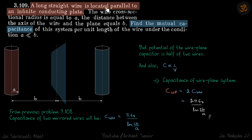A long straight wire is located parallel to an infinite conducting plate. This is the plate and we have a wire in front of it. We need to find the mutual capacitance of this system.